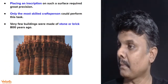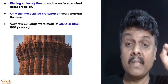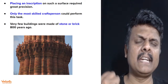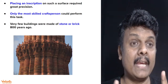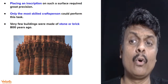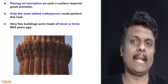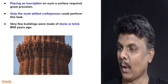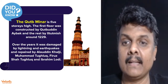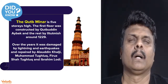If you have to write an inscription on these curved surfaces, you need to be super accurate. Only very, very skilled engineers and craftspersons can do this. Very few buildings were made of stone or brick 800 years ago, so Qutub Minar is a monument to remember. It has five stories — the first floor was constructed by Qutbuddin Aibak and the rest by Iltmish in 1229, almost 30 years later.